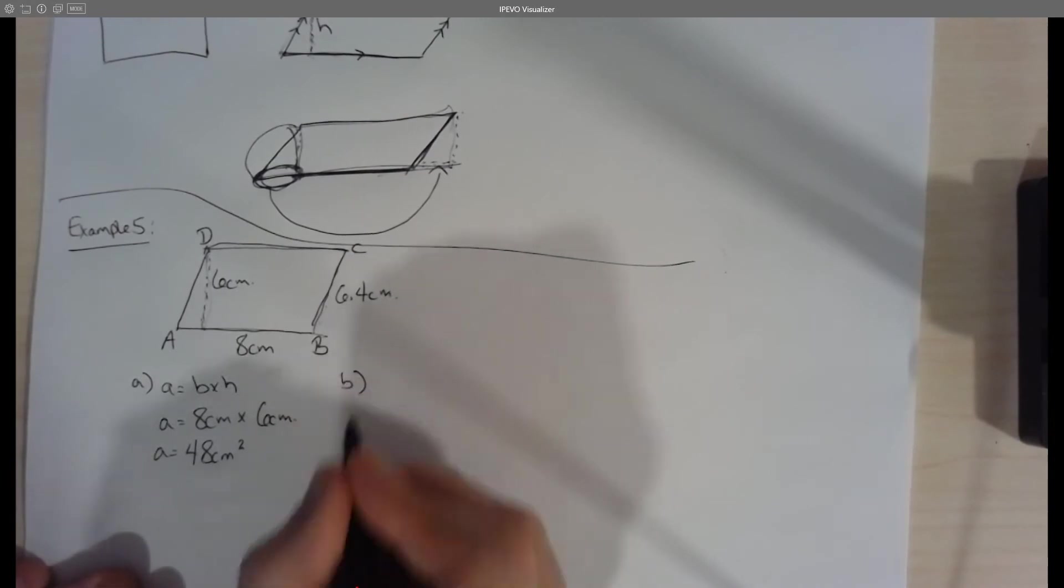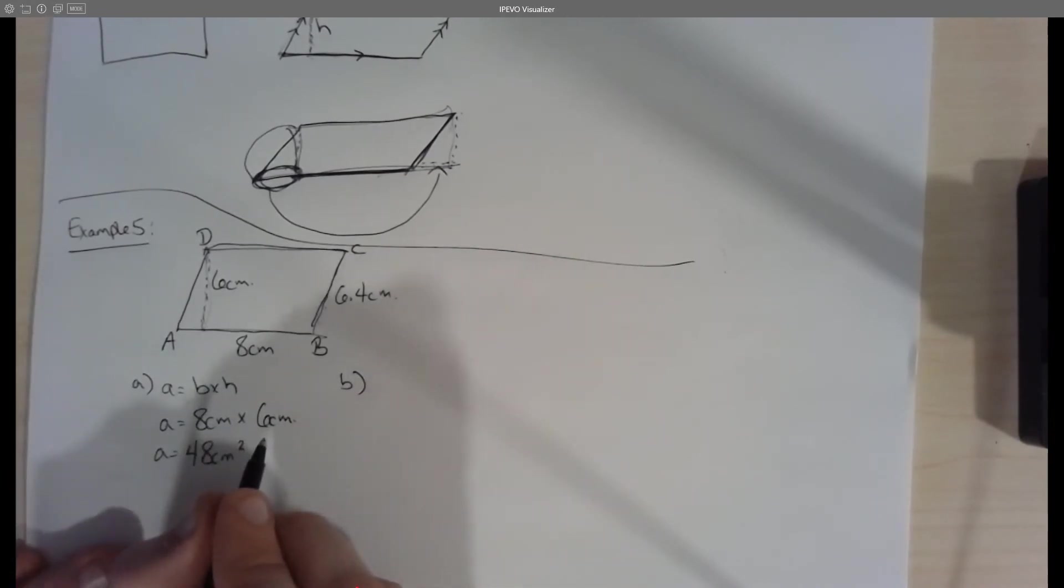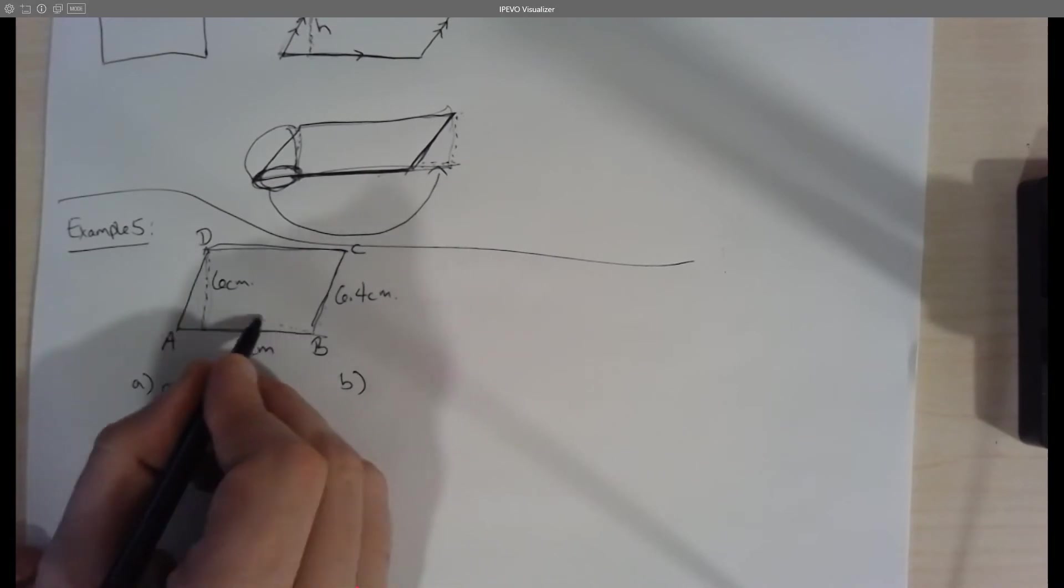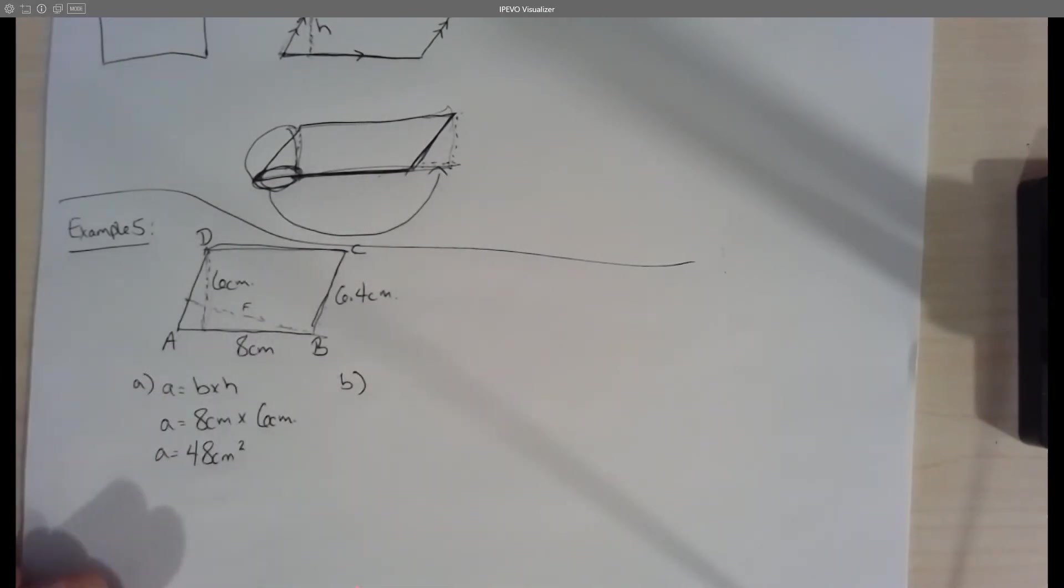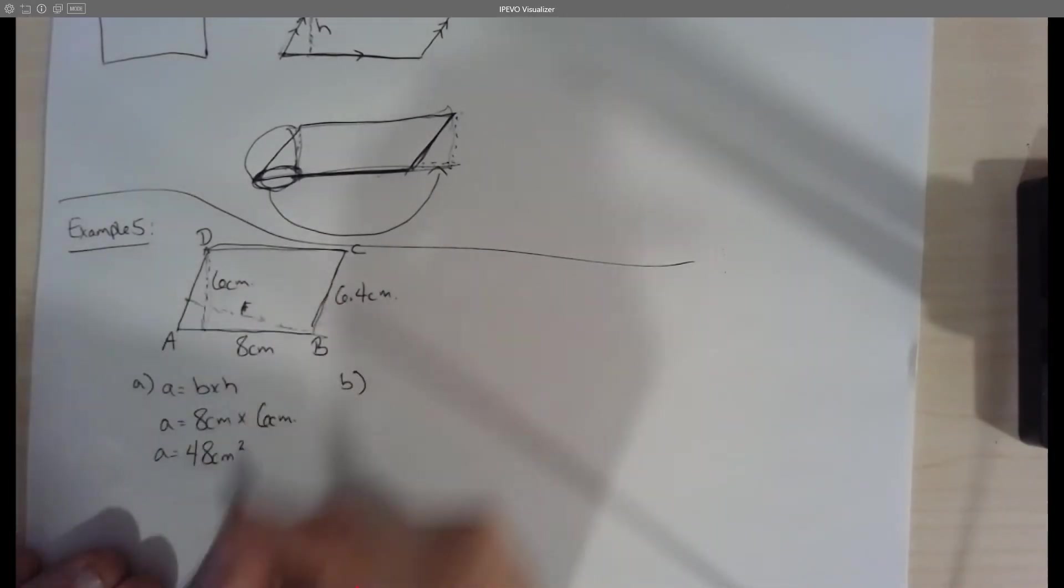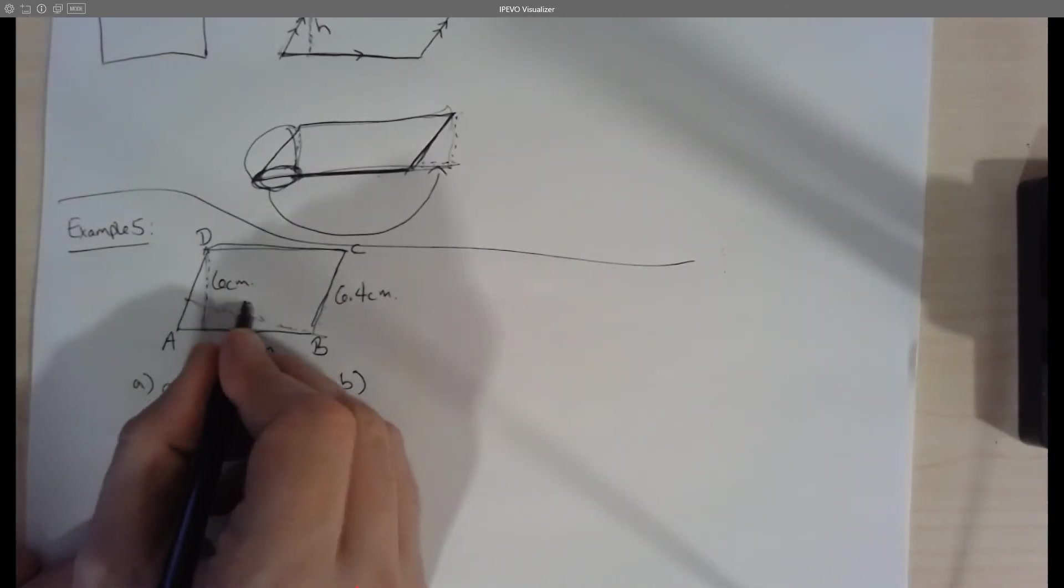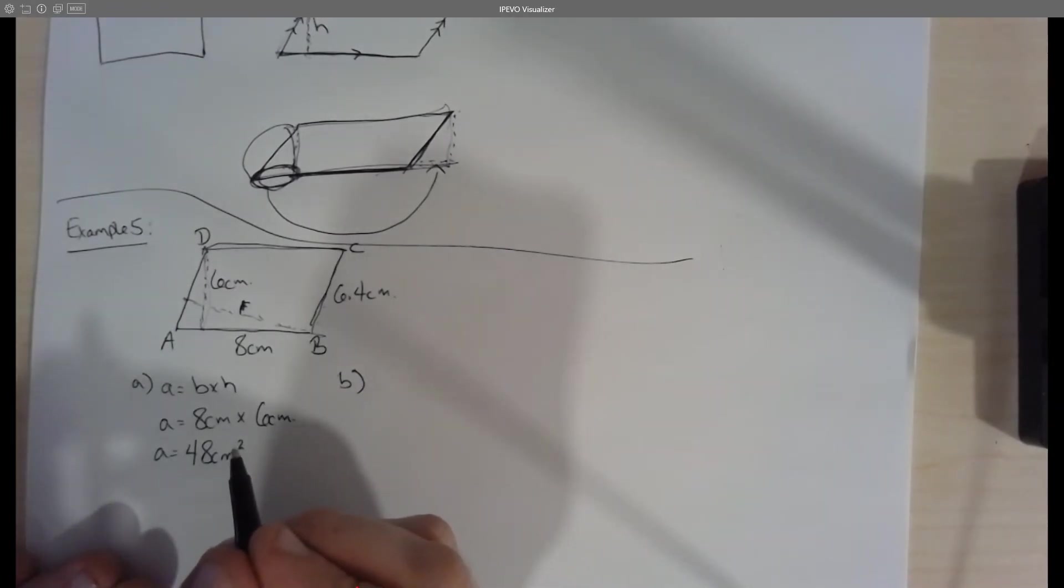Part B asks us to do something a little bit different. It asks us to find the length of BF. So it has B, it has a dotted line here to a part called F. So really, although this might seem like it's tricky, what it's asking us to do is just use a different base.